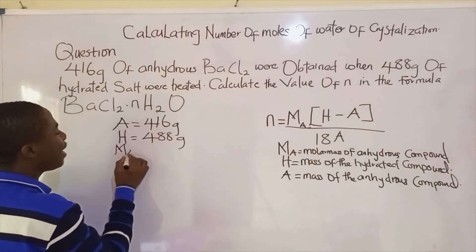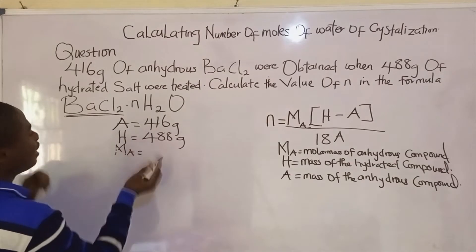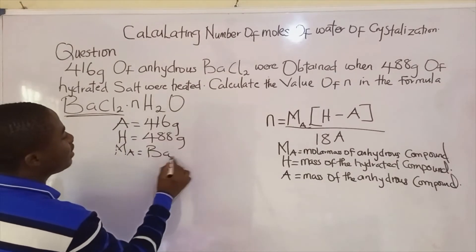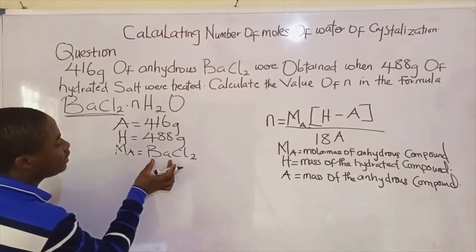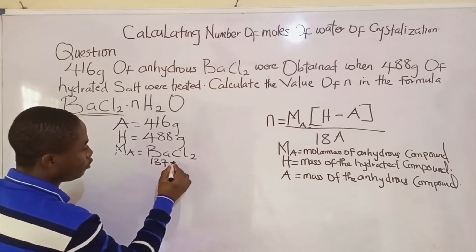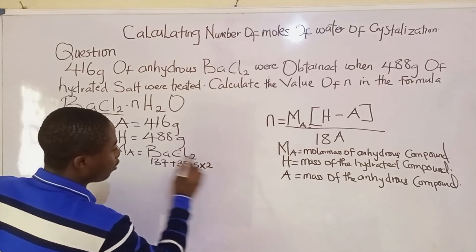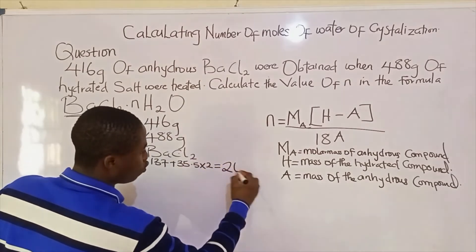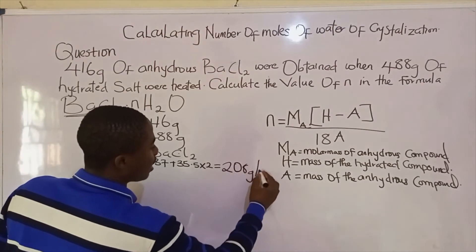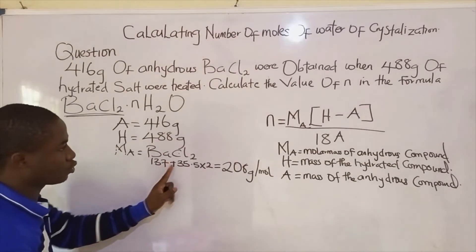Now, what would be the molar mass of the anhydrous salt? What do I mean? You just take only this. So it becomes BaCl₂. This is barium. What is the atomic mass of barium? 137 plus chlorine 35.5 times 2 because we have two atoms. So right here to calculate we get 208 grams per mole as the molar mass of the anhydrous salt.